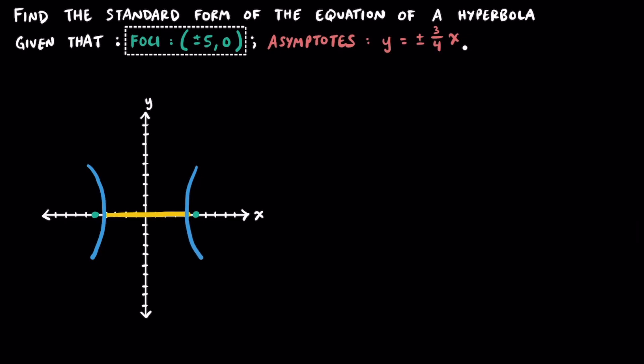Now that we know we're dealing with a hyperbola that has a horizontal transverse axis, let's make sure we use the right equation to get this started. The standard form for an equation of a hyperbola that has a horizontal transverse axis is going to be the quantity of x minus h squared all over a squared minus the quantity of y minus k squared all over b squared is equal to 1.